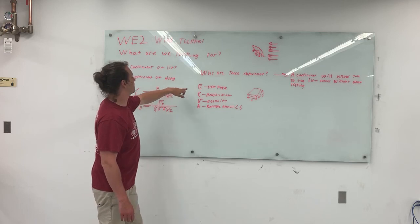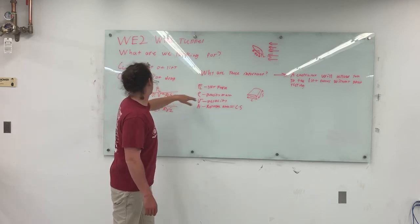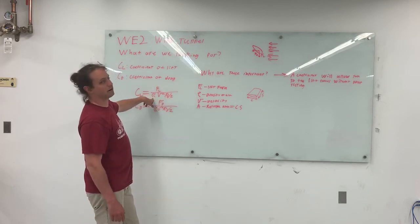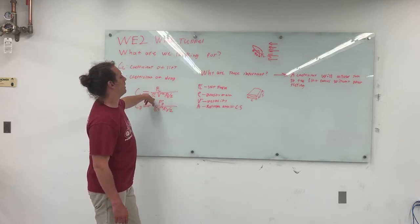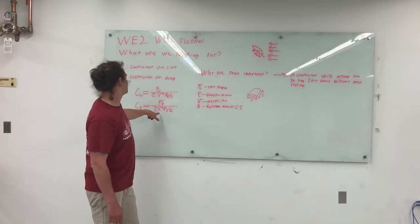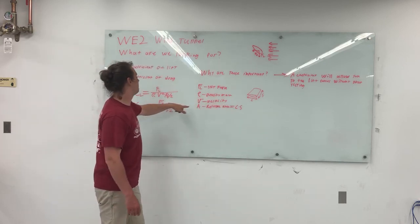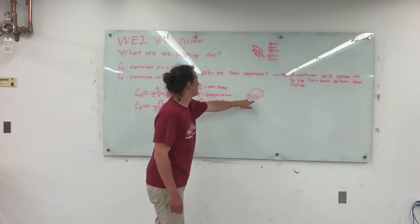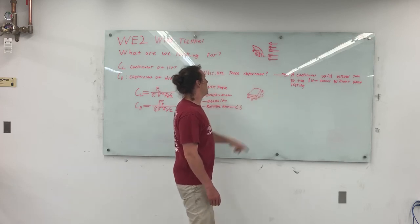A little explanation of that. So f sub l is lift force, f sub d is drag force. This fancy-looking p over here is called rho, it's a Greek letter, it means the density of air. This v squared term here, that's velocity squared, and then A is your reference area, which is your chord length times the span.